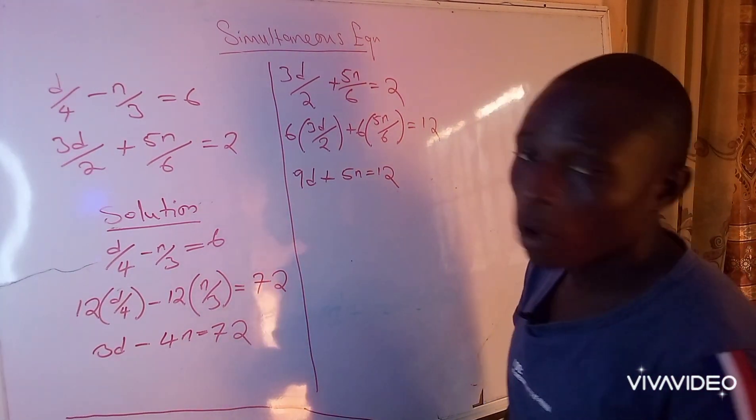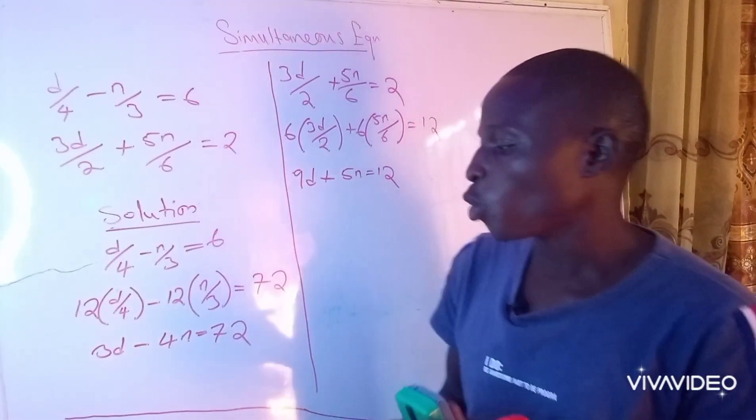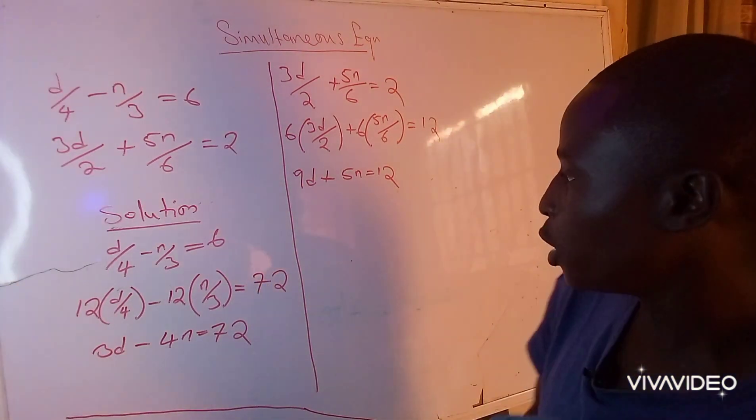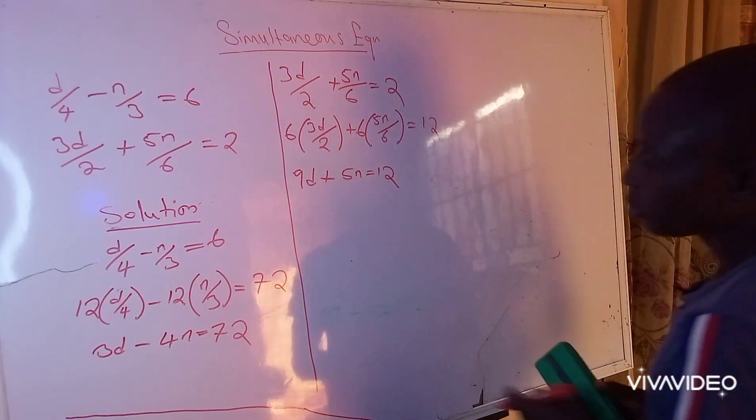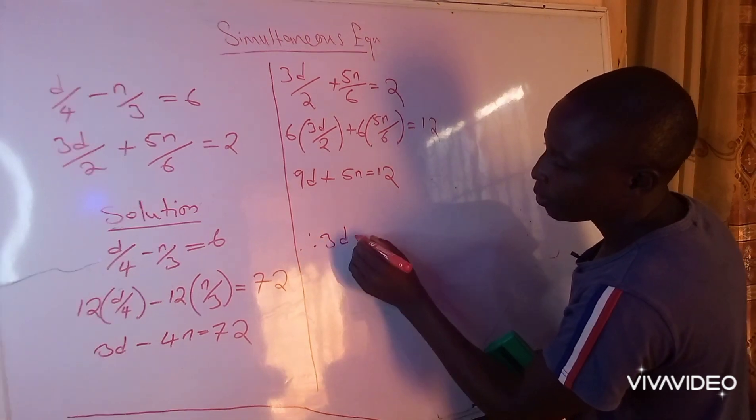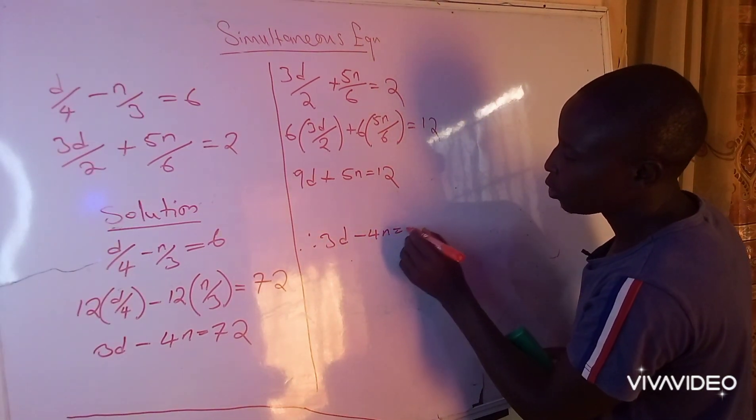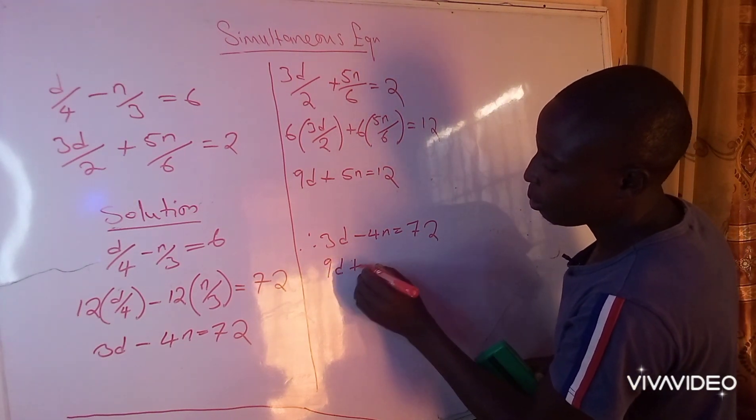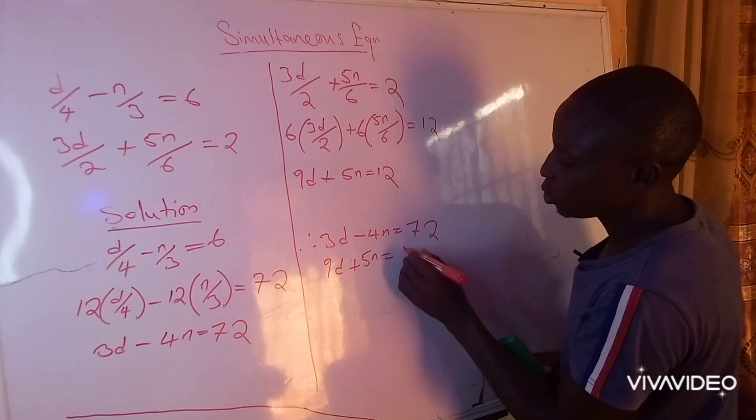So as to move by solving simultaneous equations, therefore I have: 3d minus 4n equals 72, I also have 9d plus 5n equals 12. And this is a perfect simultaneous equation.